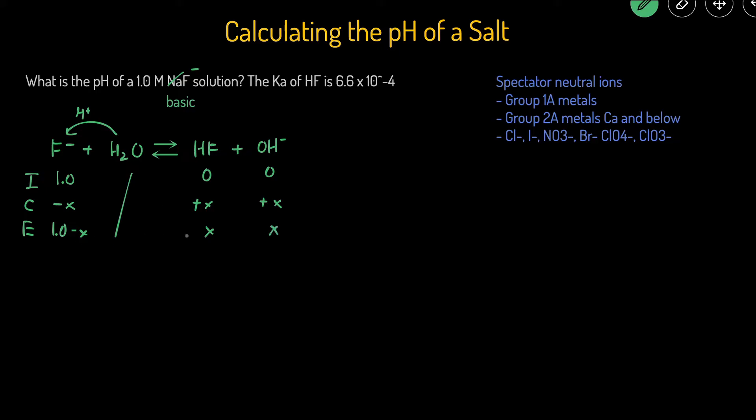Now that we have equilibrium values, or the equilibrium variables, we can plug this into the KB expression. So we're given the Ka here, but since F minus is a base, we have to use KB, not KA. So let's just set up the KB expression for now.